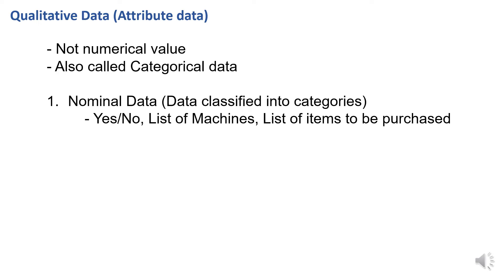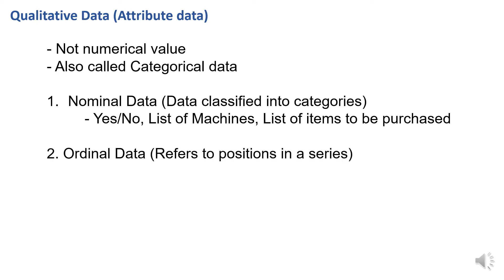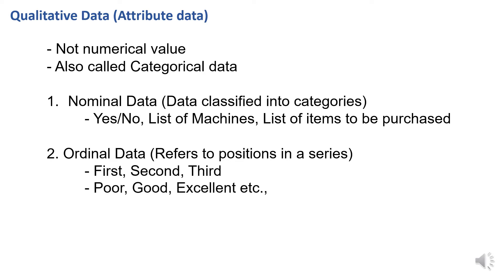The second type is ordinal data. Data is classified but the position is important in ordinal data. For example, first, second, third — the position is important. Another example: poor, good, excellent. So this is the difference between nominal data and ordinal data.